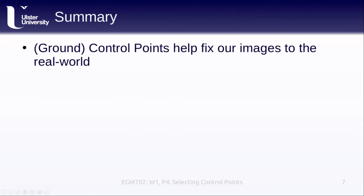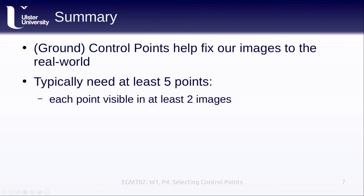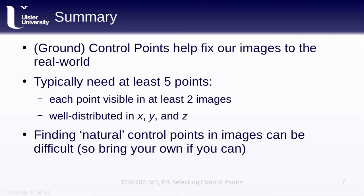To sum up: ground control points help us fix our images to the real world to make real-world calculations. We need at least five different points, each visible in at least two different images, well distributed in X, Y, and Z. And as mentioned in the previous lesson, these points cannot make a straight line with each other — if they do, the equations will no longer work. Finding natural control points in images can be difficult, so if you're planning your own survey, bring control points with you and make sure you survey them properly.